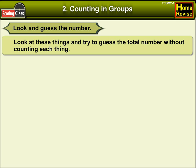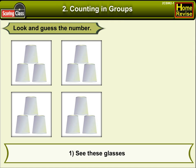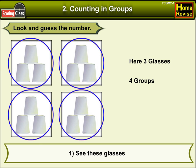Look at these things and try to guess the total number without counting each thing. Number 1 — see these glasses. Here, 3 glasses are in one group, and there are 4 such groups. It means there are 12 glasses.